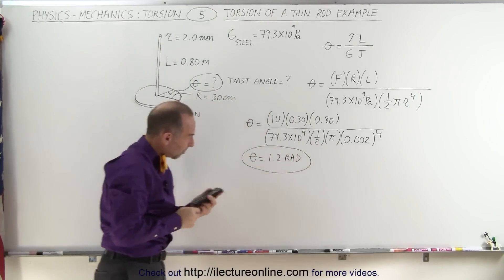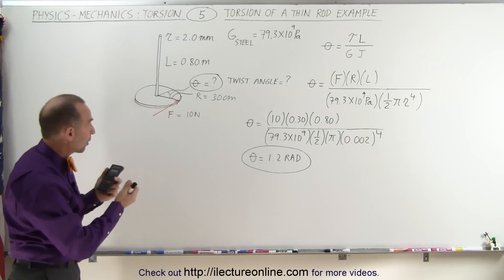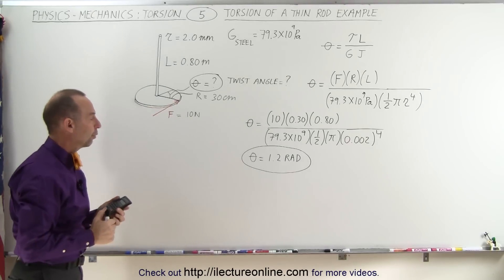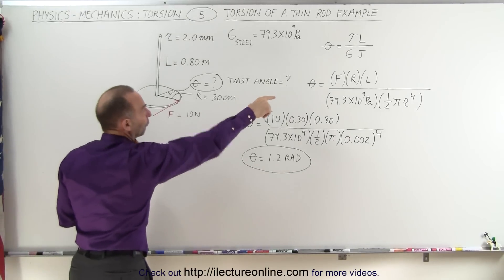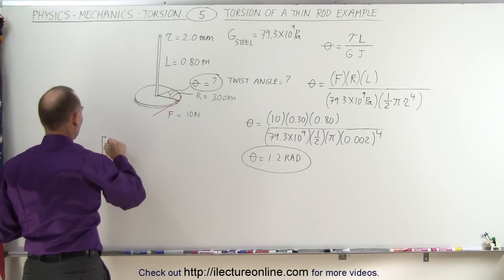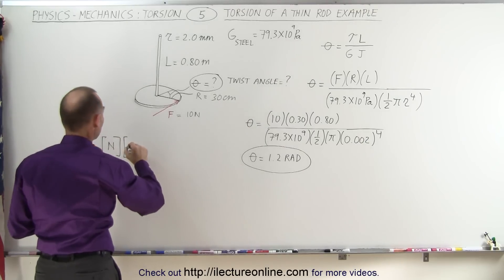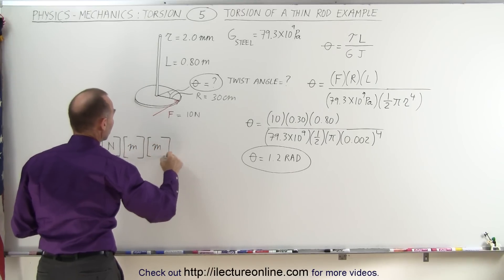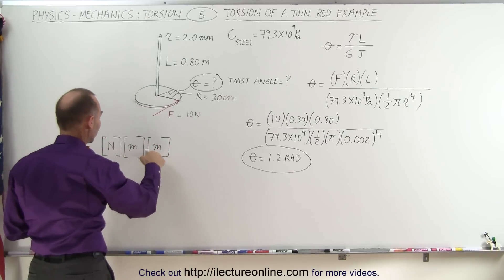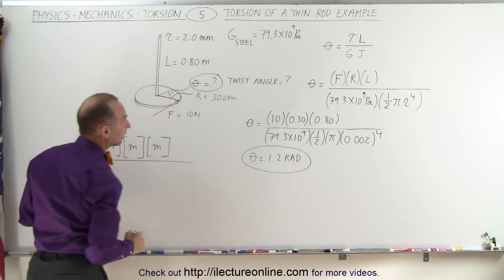All right, so that's about 60 to 70 degrees of twist based upon that force. Now unit-wise, let's see what we get. So on the units, force will be newtons. We have newtons multiplied times radiuses in meters, and length is in meters. So in the numerator, we get newtons times meters times meters. In the denominator,